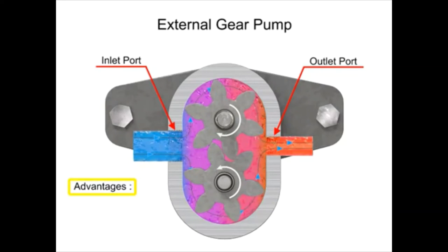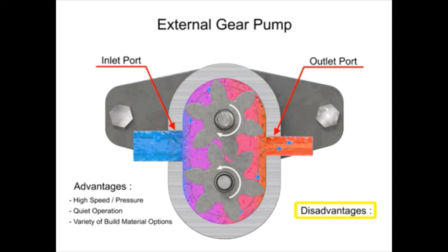The advantages of external gear pumps are their high speed and pressure, relatively quiet operation, and that their design accommodates a wide variety of materials. Disadvantages include bushings in the liquid area can become worn and that they have fixed end clearances.